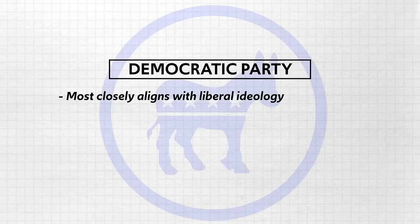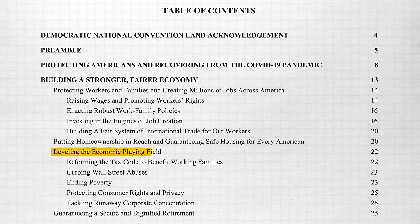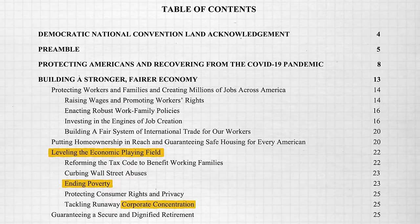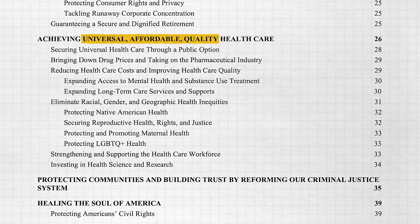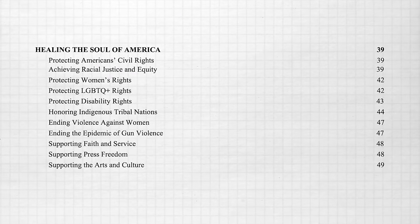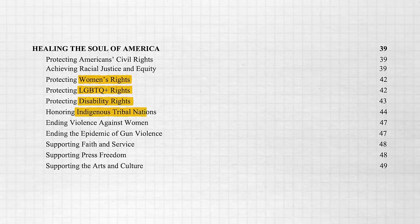Now let's look at some examples of liberal ideology in the platform of the Democratic Party. You really only need to look at the table of contents to see the liberal ideology here. They want to level the economic playing field by ending poverty and breaking up corporate concentration. They want universal, affordable, quality health care, which would require significant government intervention. Under 'Healing the Soul of America,' the Democrats want to fight for women's rights, LGBTQ+ rights, disability rights, indigenous tribal nations, and more. Just from the table of contents, you can see the liberal ideology that animates the Democratic Party.